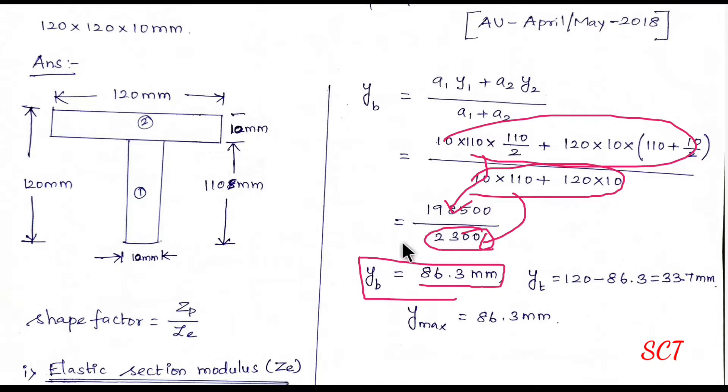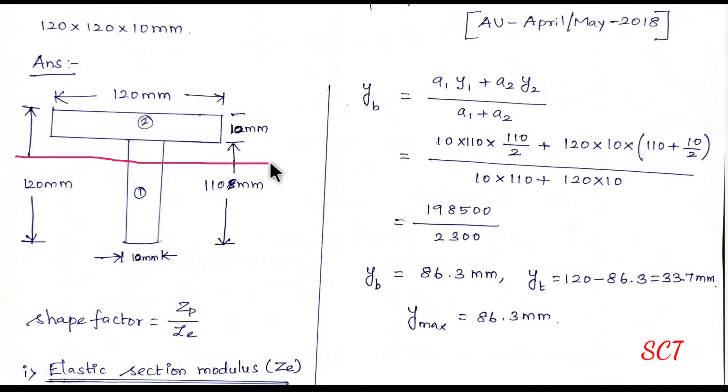So this is the total area, capital A value. Now from the top, total depth is 120 mm. But if you look at the bottom, neutral axis is 86.3. 120 mm is 86.3, so it's 33.7 mm. Now what are the maximum? So this is the maximum, so it's 86.3 mm.